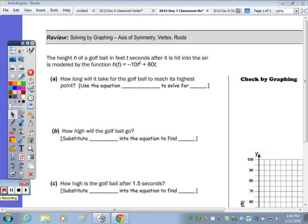Today's notes we're just going to review what we've done so far on days 1 through 6. We're going to start by applying what we learned in the beginning: axis of symmetry, vertex, and so on. If we take a look at the first page, we have the height of a golf ball in feet t seconds after it is hit into the air, modeled by the function h(t) = -10t² + 60t.